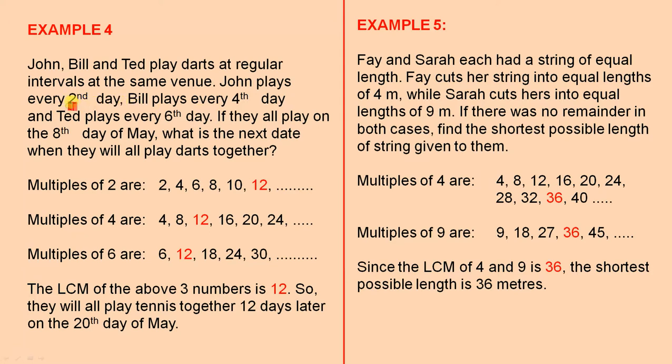So, one of them plays on the second, the other one plays on the fourth, and the other one plays on the sixth. So we find the LCM of those three numbers. So, in order to do that, we work out the multiples of two first, then the multiples of four, then the multiples of six.